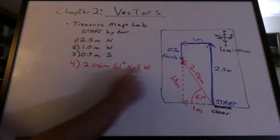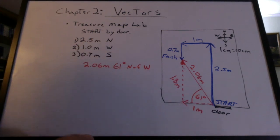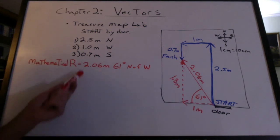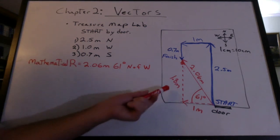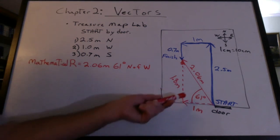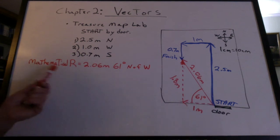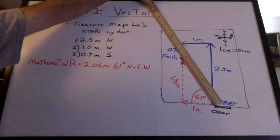This one vector — the one leg of the journey that replaces the others — is called a resultant. We found this resultant doing the Pythagorean theorem and tangent, so it's a mathematical resultant. You could also think of it as a theoretical resultant.